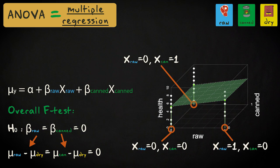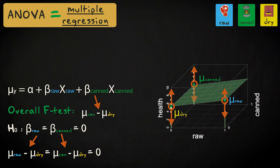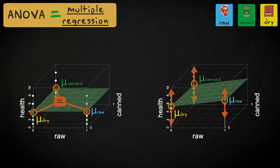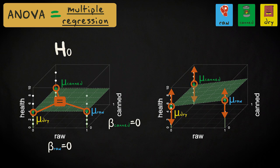As you can see, the three groups are located at the corresponding values 0 and 1 of the dummy variables. The plane goes through the means of these groups, and the observations are scattered around these means. In multiple regression, the null hypothesis corresponds to a flat plane where the means are all the same, resulting in regression coefficients of 0. As soon as one or more means differ from the rest, the plane will be tilted.